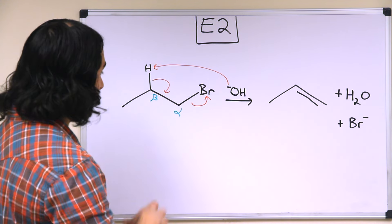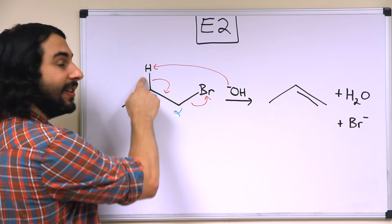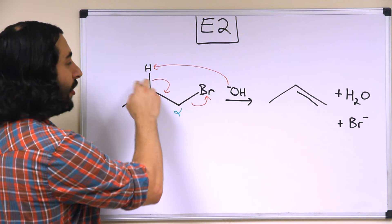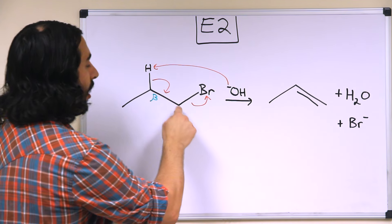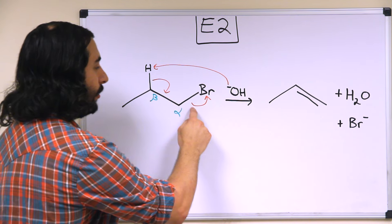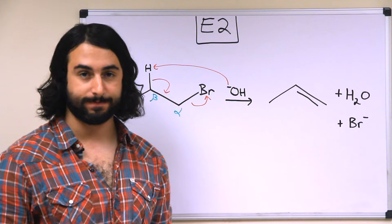Instead what happens is that this carbon is able to receive the electrons in this carbon-hydrogen bond, which are the electrons that form the pi bond, because this carbon can also lose the electrons that are now belonging to the bromine.